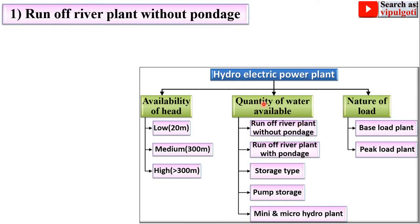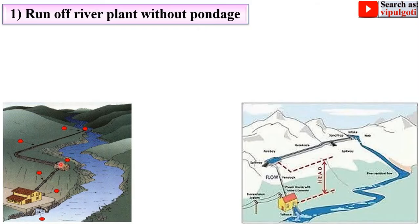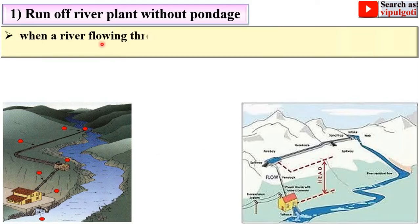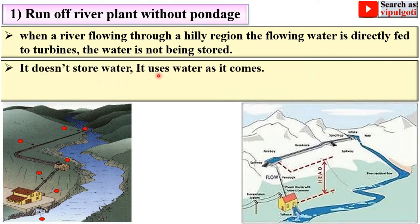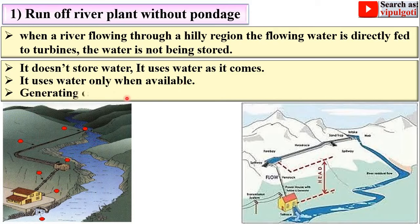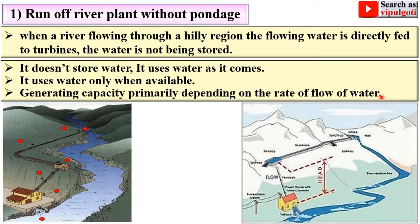According to quantity of water available, the first type is the runoff river plant without pondage. There is no pondage, so the flowing water from a river — particularly in hilly regions — is directly fed to the turbines. The water is not stored; it uses water as it comes, only when available. Generating capacity depends primarily on the rate of flow of water.